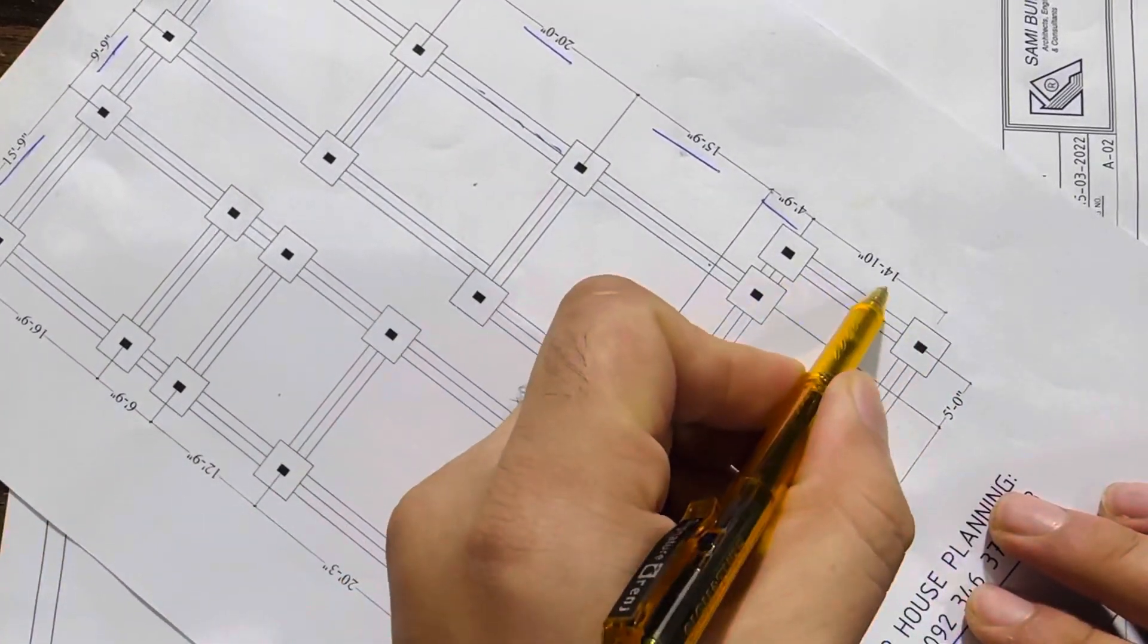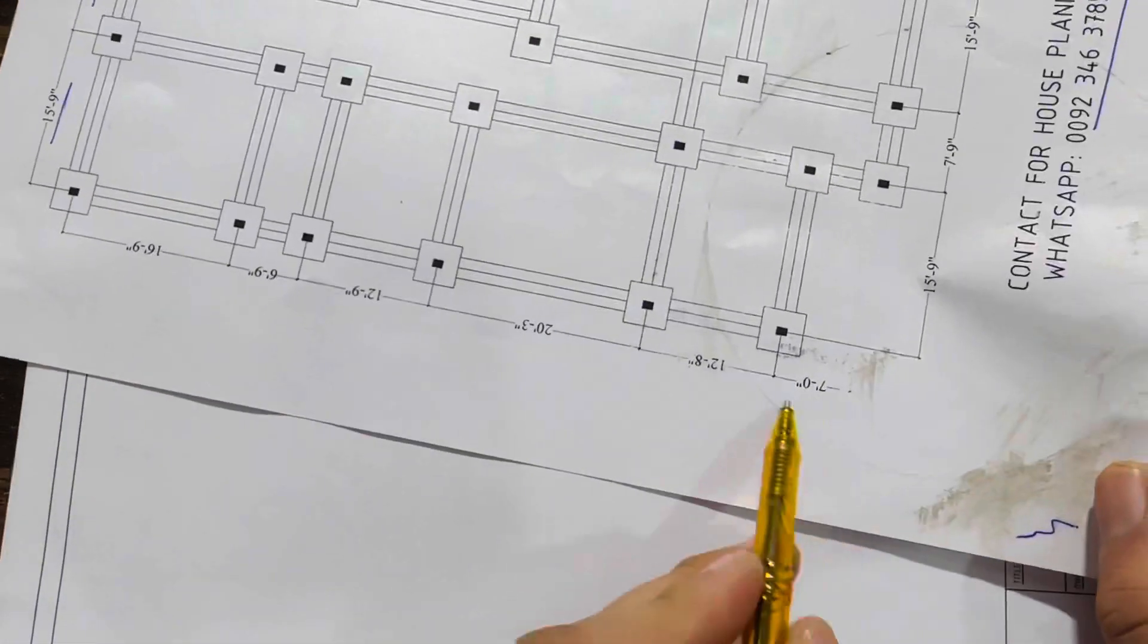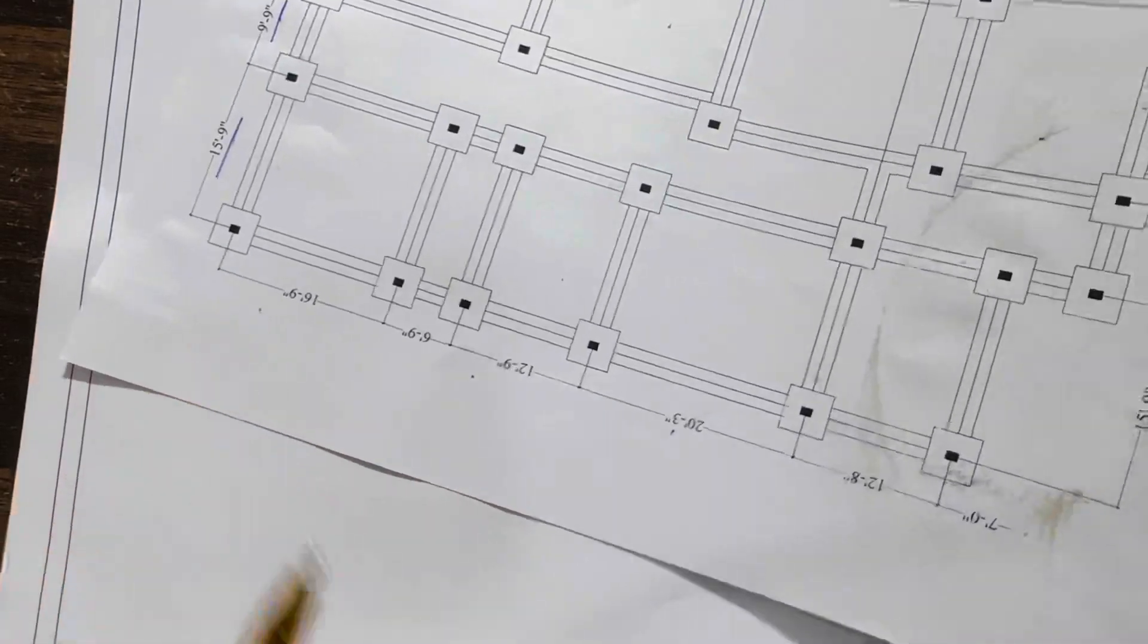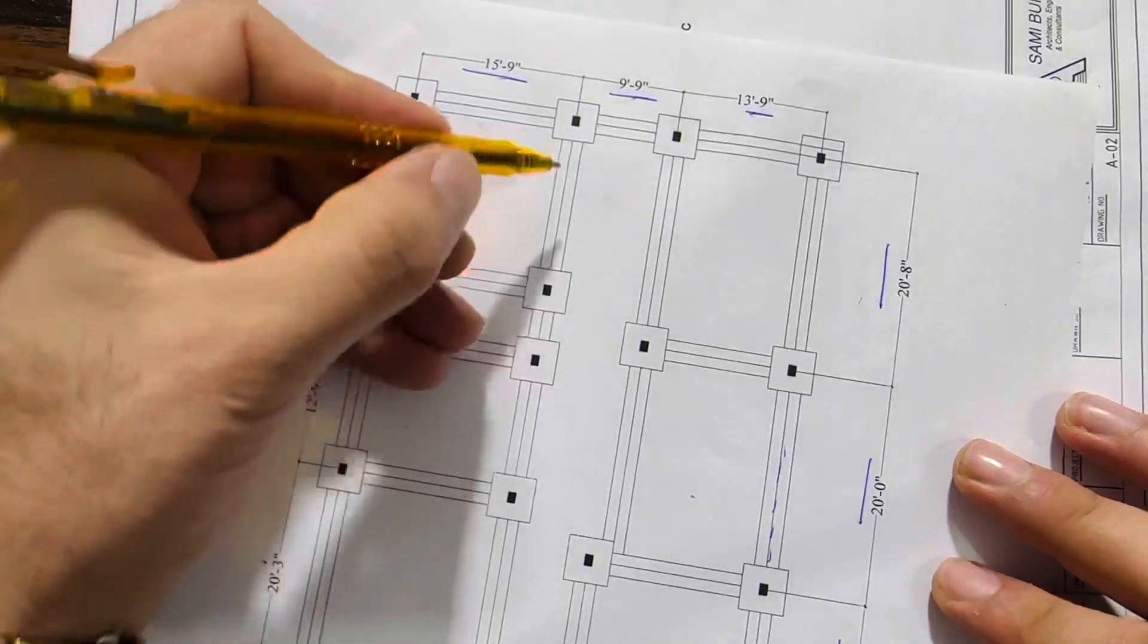Here we don't have any column, but this is just by centerline method. The span between two columns is 14 feet 10 inches. You can see the dimensions on the other side. Every column is connected by a strip.